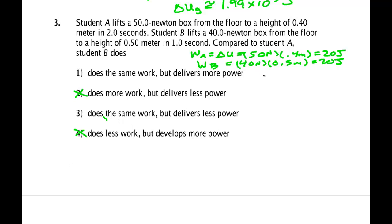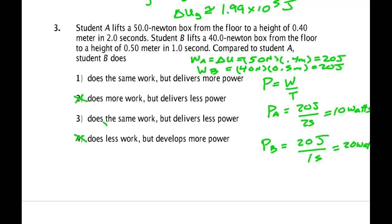Now power. Power is work over time. So power in A is 20 joules done in 2 seconds, which is 10 watts. And power B does it twice as fast, so it's going to have twice the power, 20 watts. Same energy, but not the same power. So does the same work, but delivers more power. The correct answer is number one.